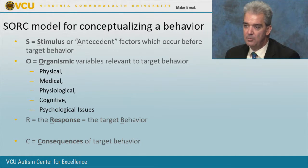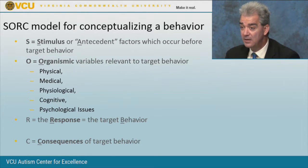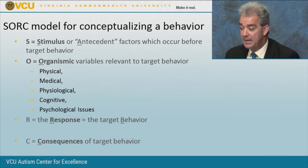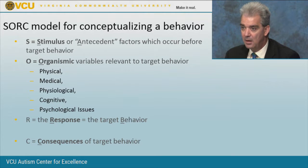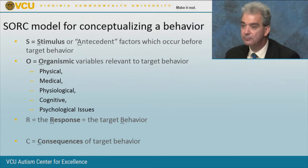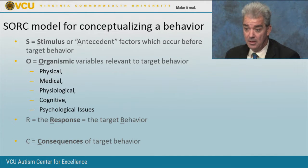Organismic variables can be physical issues like illness, medical issues like stomach pains, physiological like not getting enough sleep, cognitive issues like not knowing how to do the math homework or reading material beyond one's ability, or psychological issues — being uncomfortable with certain subject matter. Any one of those variables can have an impact on behavior. Understanding the O is really what the SORC model is about.